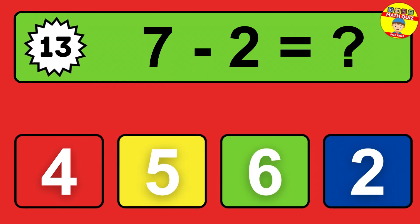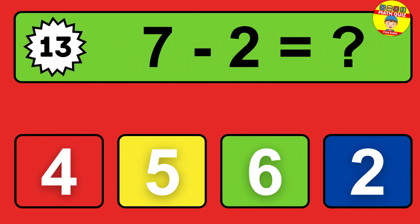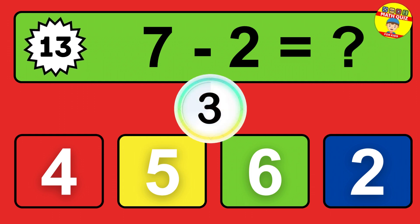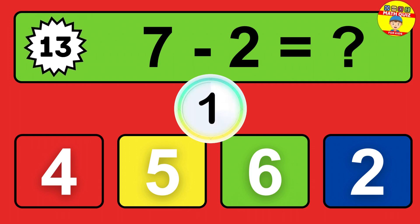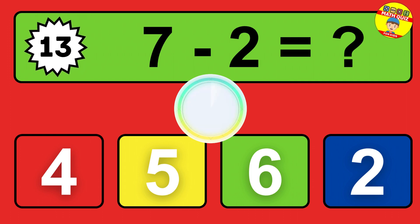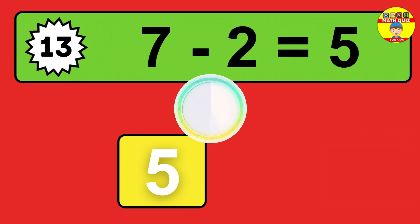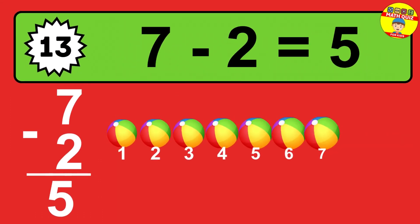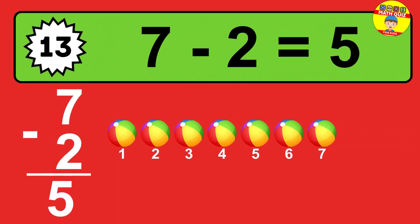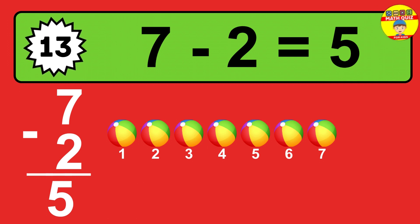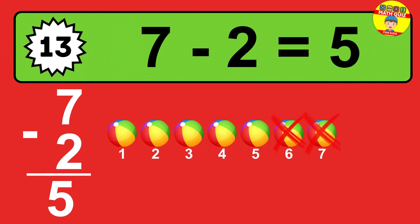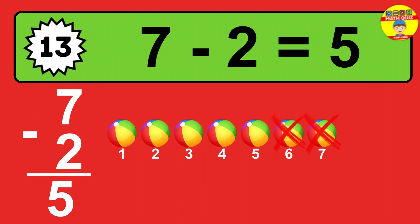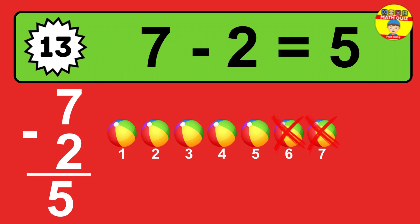Question 13. 7 minus 2 equals what? So the answer is 7 minus 2 is 5. Let's count it. 1, 2, 3, 4, 5.